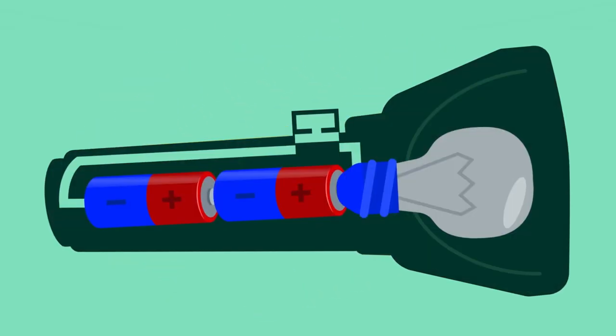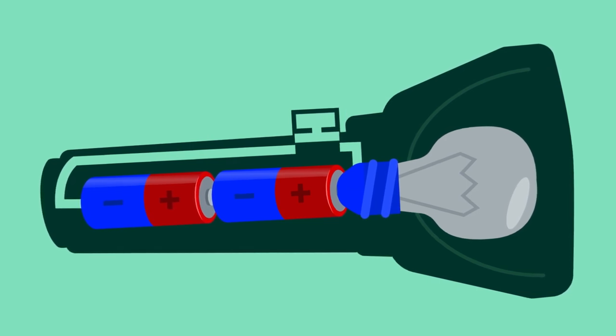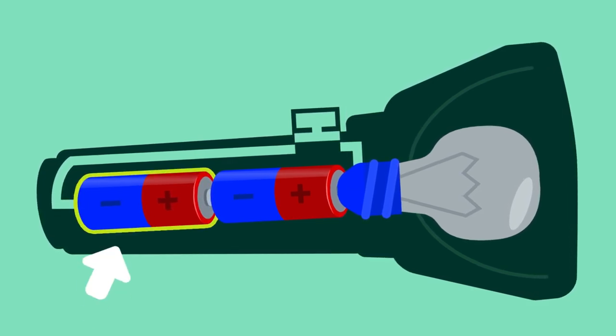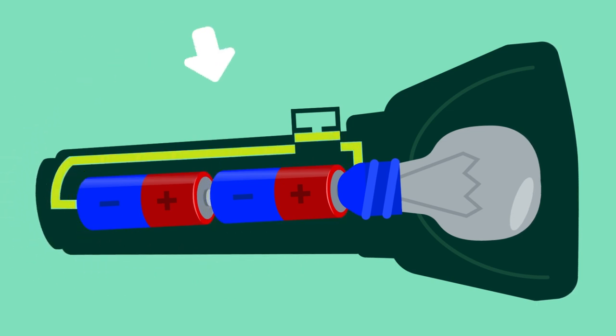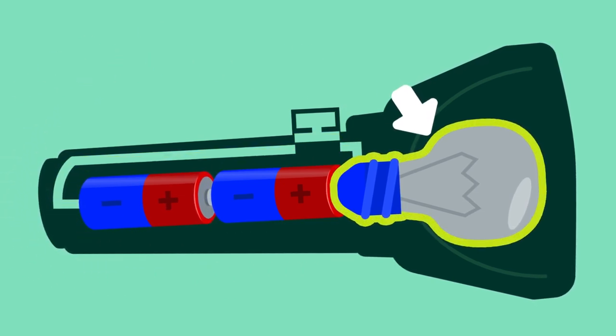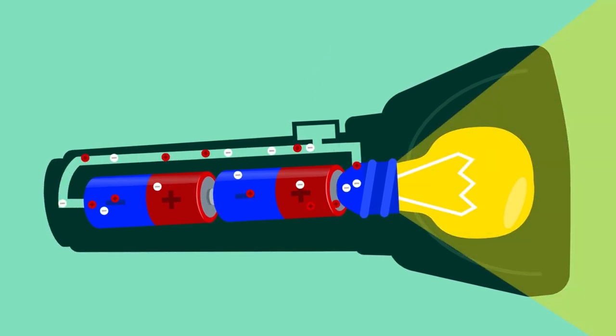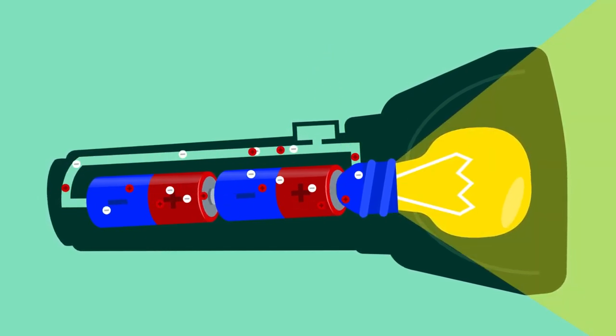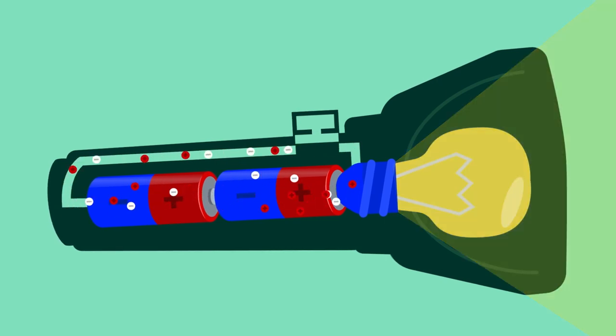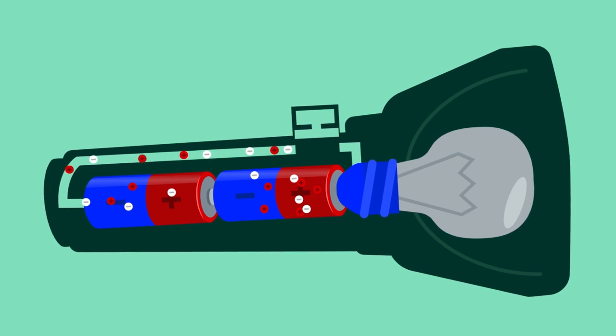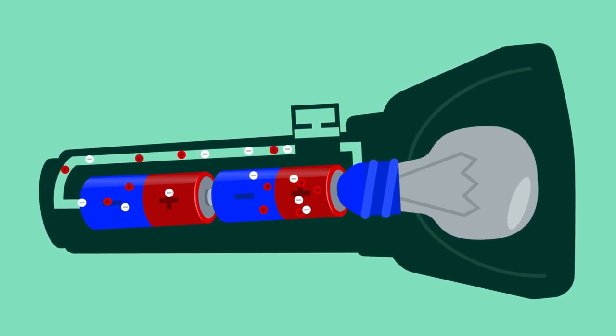Here we see an electric circuit inside this flashlight. There are two batteries, which are the source of electricity, and the wires that carry the electric charge to the bulb. If I turn on the switch, the electric charges begin to flow through the wires and the bulb emits light. If I turn off the switch, the electrical charges stop flowing and the bulb stops emitting light.